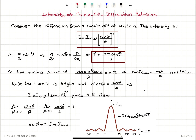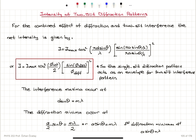Knowing that we have this single slit diffraction pattern intensity distribution, if we revisit our Young's double slit experiment, we can talk about the intensity of two-slit diffraction patterns.